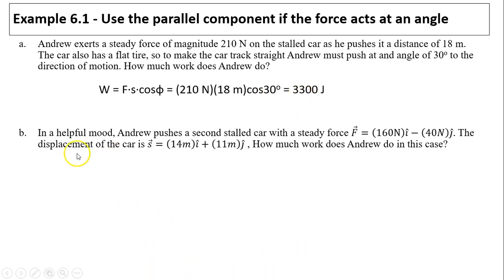Let's take a look at the next example. In a helpful mood, Andrew pushes a second stowed car with a steady force. You know the force in this case, and you know the displacement, but this is given in component form. How much work does Andrew do? We can try to use the same equation, but first we have to find the angle, which is quite difficult. Another way is to use the dot product: multiply the components, x times x and y times y. So you have 160 times 14 minus 40 times 11, giving you 1,800 joules.